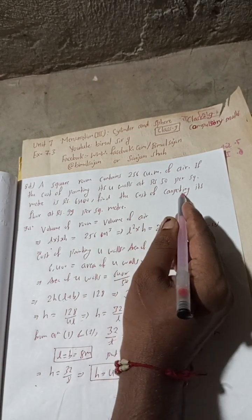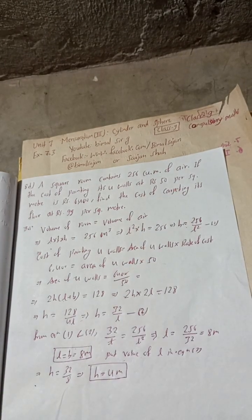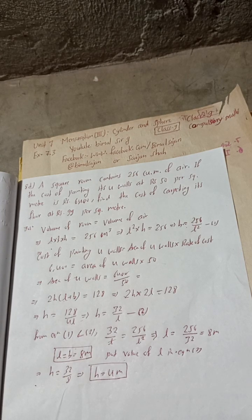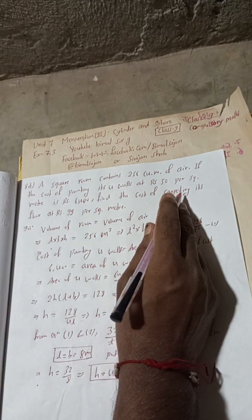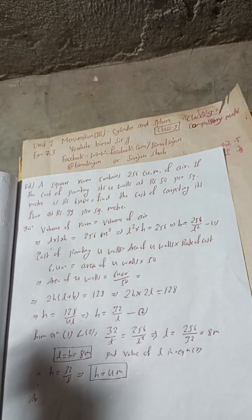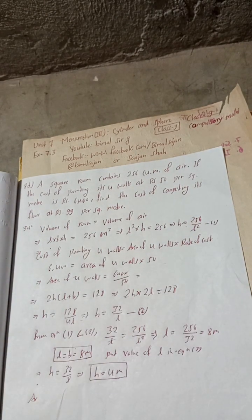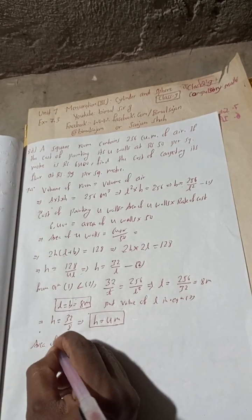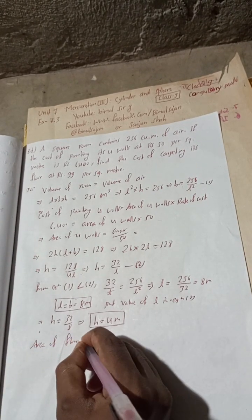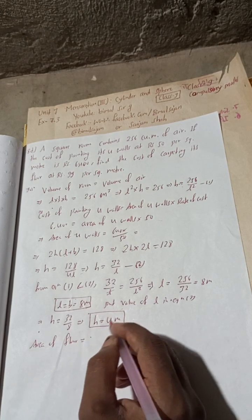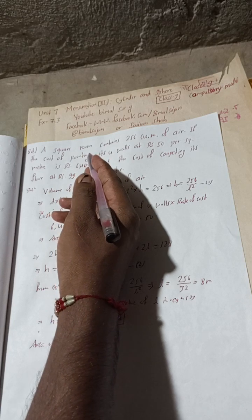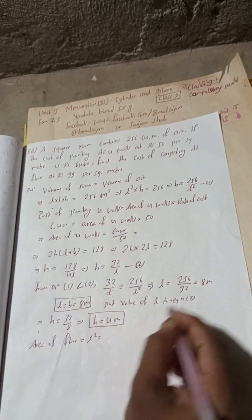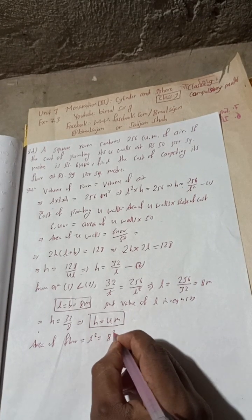Now find the cost of carpeting the floor. The carpet covers the floor only, so first find the area of the floor. Since the room is square, area of floor = L² = 8² = 64 square meters.